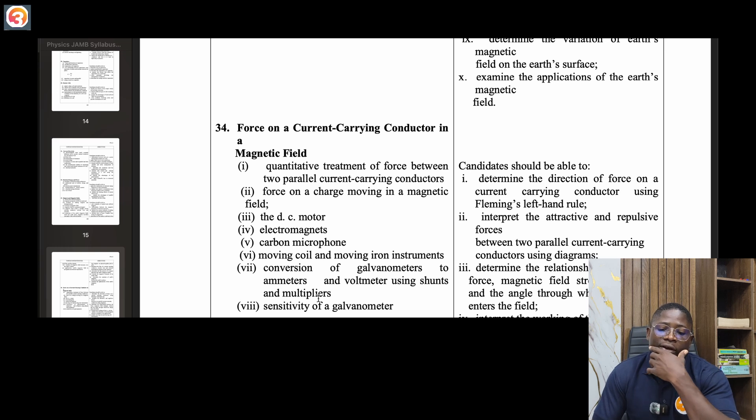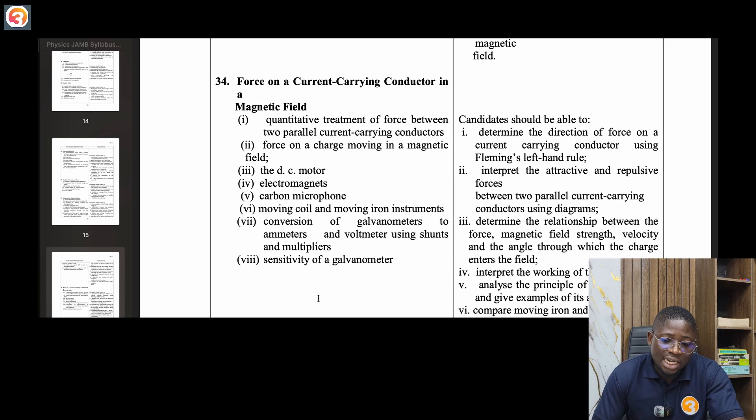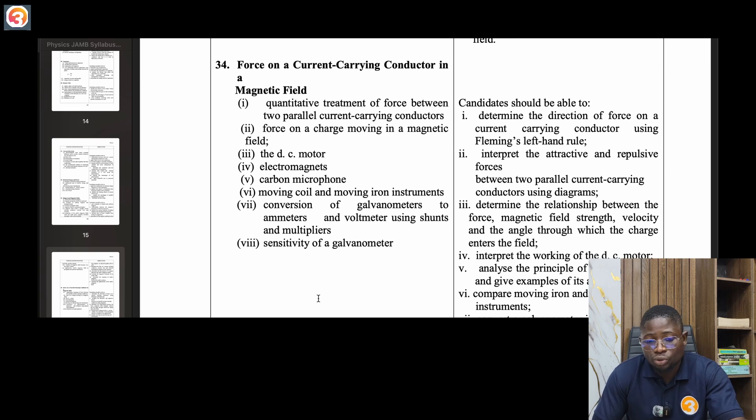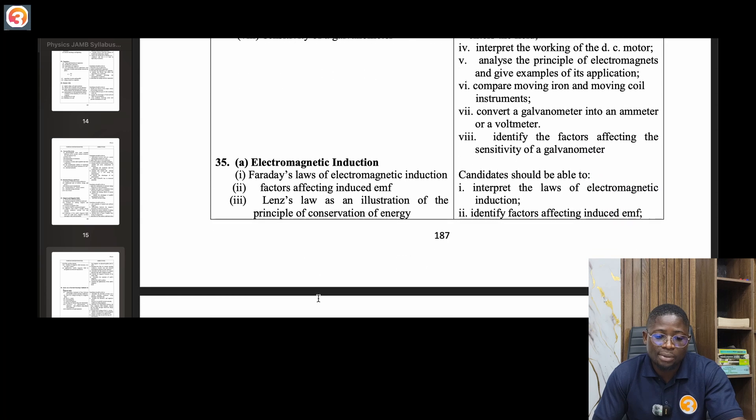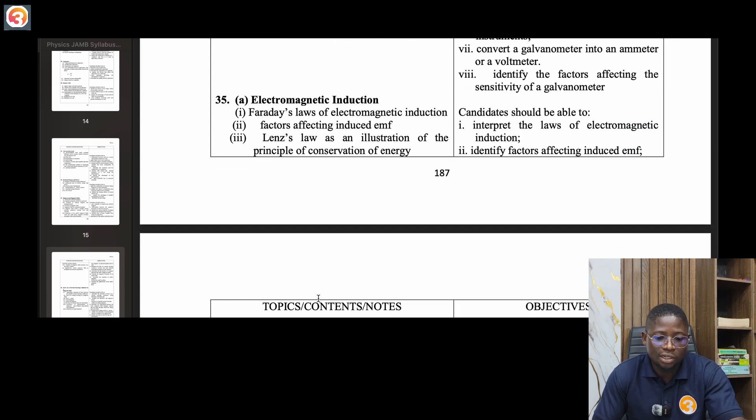Thirty-four, force on a current-carrying conductor in a magnetic field. Quantitative treatment of force between two parallel current-carrying conductors, force on a charge moving in magnetic field, DC motor, electromagnet, carbon microphone, moving coil and moving iron instruments, conversion of galvanometers to ammeters and voltmeters using shunts and multipliers, sensitivity of a galvanometer.